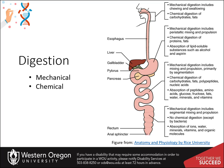Digestion of food has two major components: mechanical digestion and chemical digestion. Mechanical digestion includes processes such as chewing, peristaltic mixing, emulsification of fats, and any process that physically breaks down the food molecule into smaller pieces. Chemical digestion, on the other hand, results in the chemical alteration or breakdown of the food molecule.